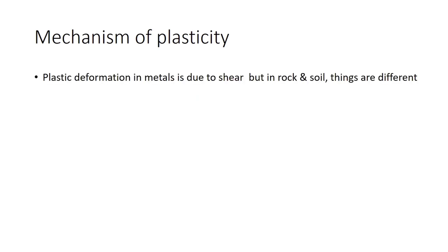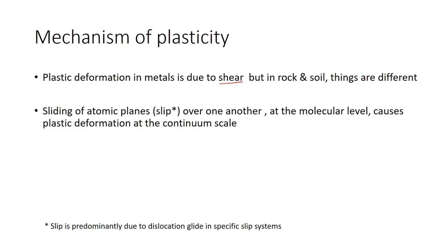Metal plasticity is due to shear whereas in rock or soil plasticity, it also depends on pressure. Let's focus on the metal plasticity here. Sliding of atomic planes over one another at the molecular level causes plastic deformation at the continuum scale.